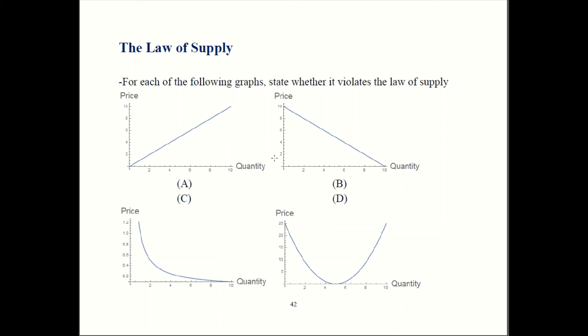For graph B, when price goes up, quantity is going down. That's the opposite of what the law of supply says, so that can't be right.